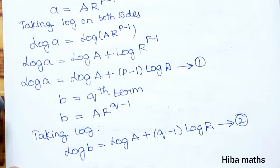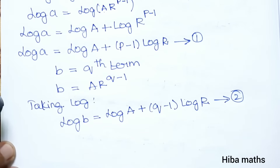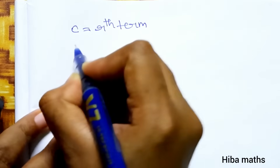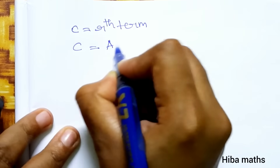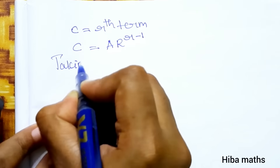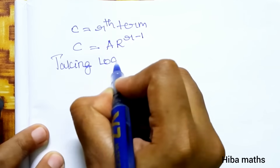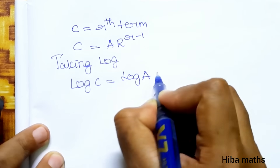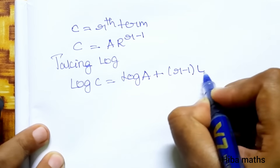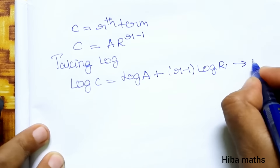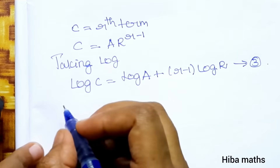So the second result is log B equals log A plus (Q minus 1) into log R. And similarly, log C equals log A plus (R minus 1) into log R. This is the third result.